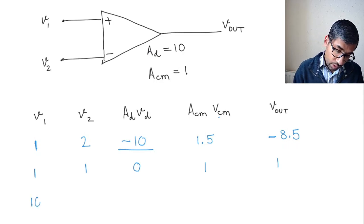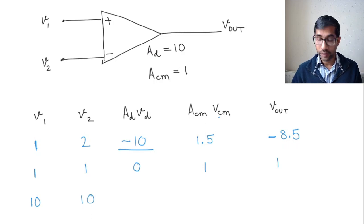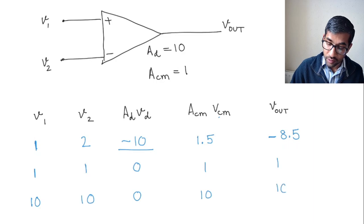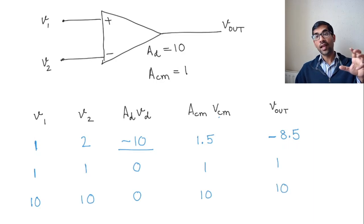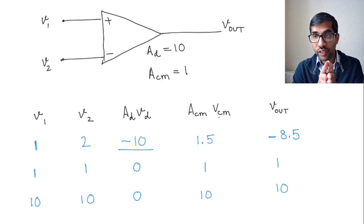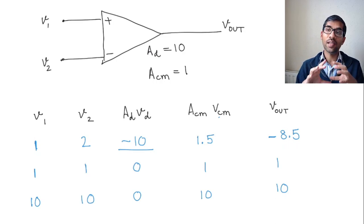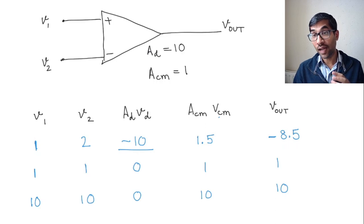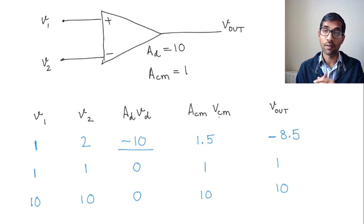Now, what happens if you give 10 volts and 10 volts, let's say? Again, you will have 0, and then you get 10 volts here, and then you get 10 volts here. So you can see that because of this common mode gain, it is no longer true that the op-amp only gives you an output, a non-zero output, when the difference of the signals is greater than 0, or different from 0.